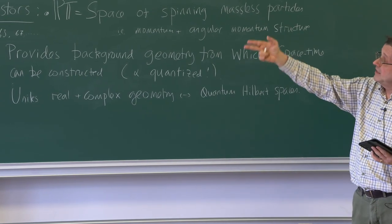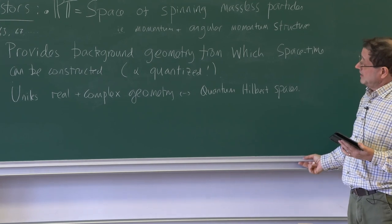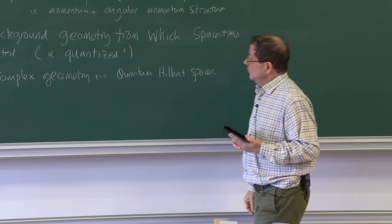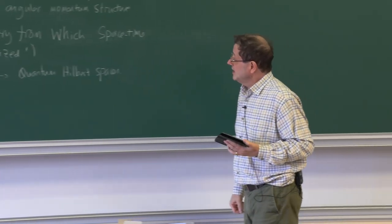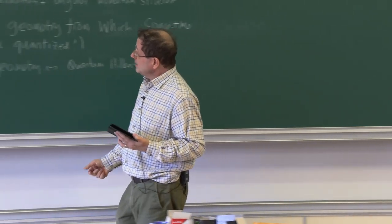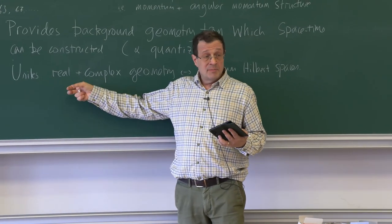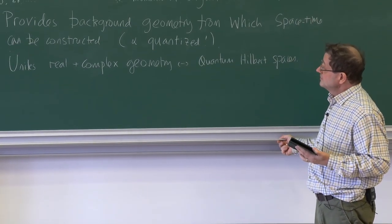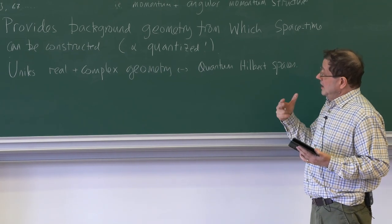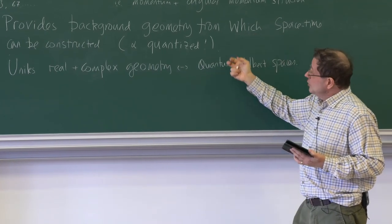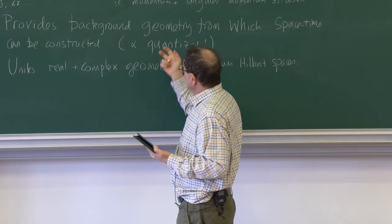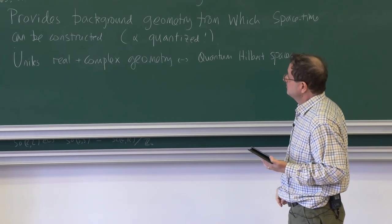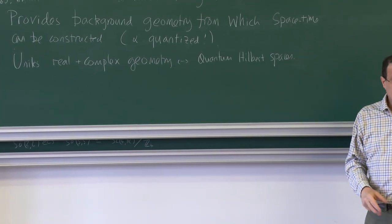Penrose wanted to say this space provided a background from which you reconstruct the space-time points, and you quantize the way in which you obtain those points. To a certain extent, that's partly what I'm talking about here and how that gives rise to a gravitational S-matrix. The fact that it's a complex manifold was important to Roger because he felt that the complex twister space would be more 'quantum' — having more mathematics in common with the quantum Hilbert space.